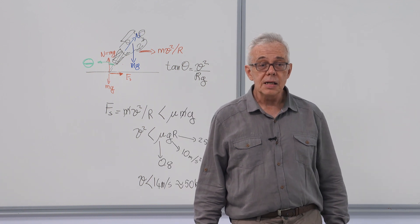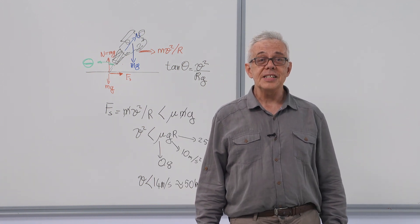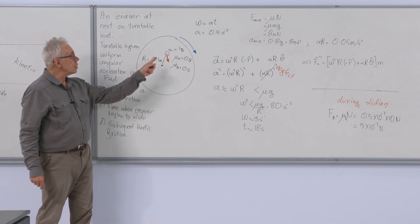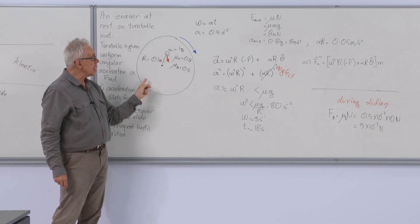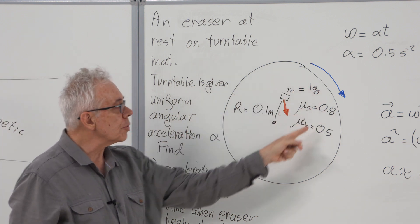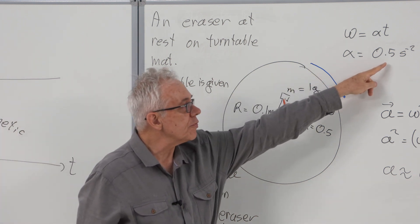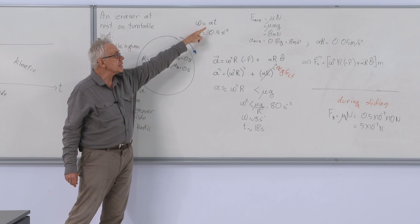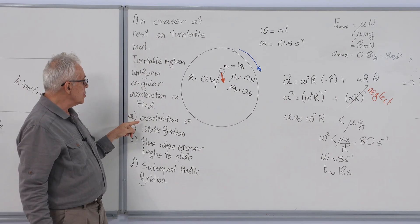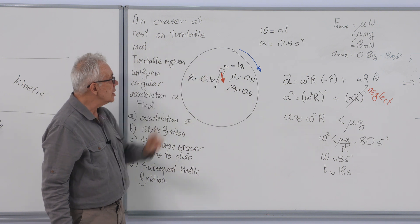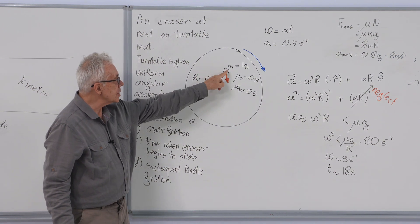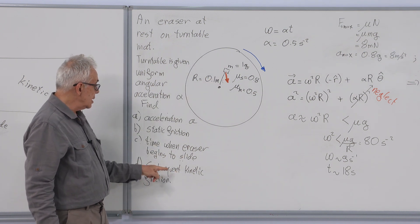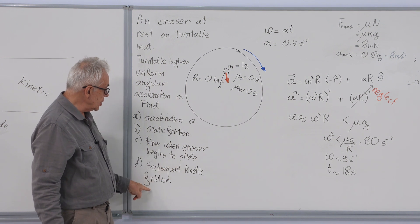If you are riding a bicycle, I strongly suggest that you slow down when you have to take a curve. Our last example involves an eraser that is at rest on a turntable mat. The turntable is given uniform angular acceleration of 0.5 radians per second square so that its angular speed is alpha t. And we are required to find the acceleration of the eraser, the static frictional force acting on it, the time when the eraser starts to slide, and after it begins to slide, what is the subsequent kinetic friction.